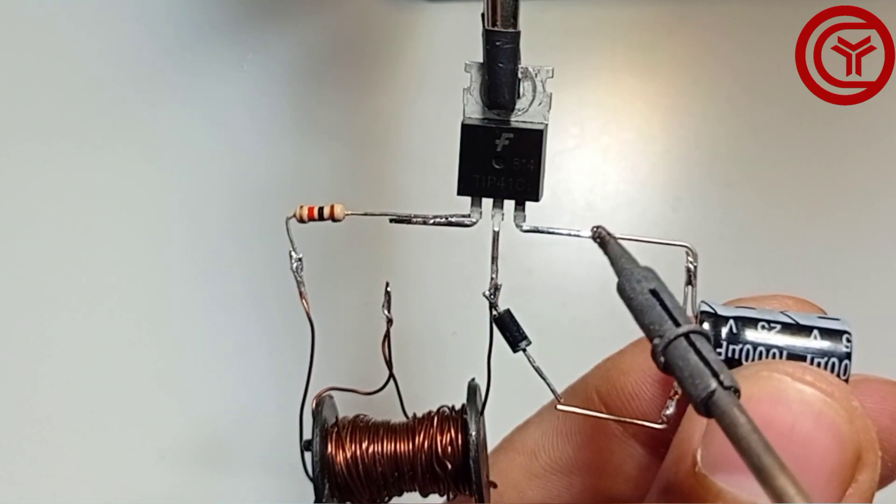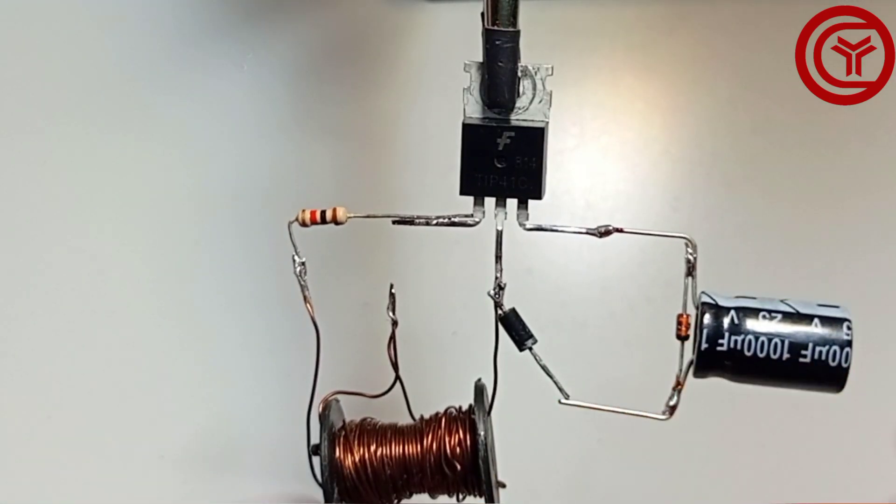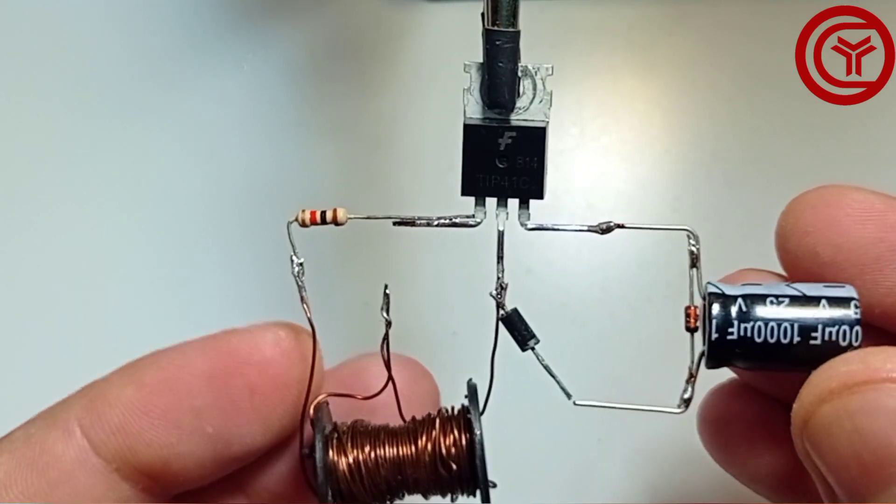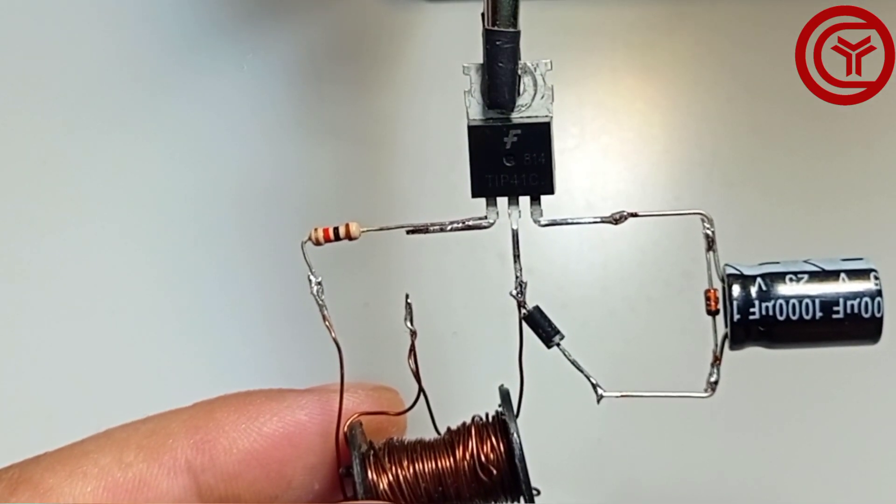Solder capacitor negative to emitter of transistor and solder capacitor positive to negative of diode.